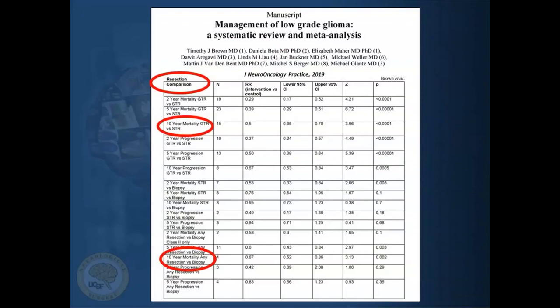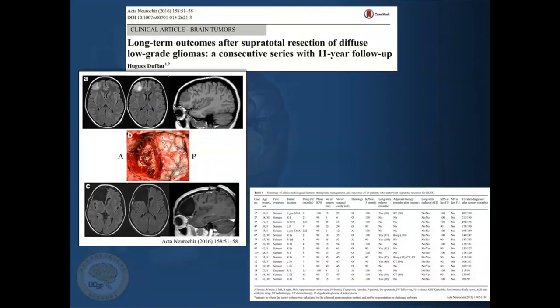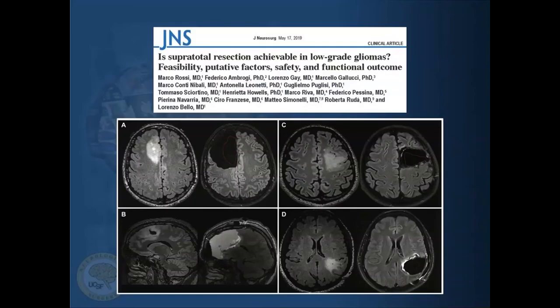With regard to low-grade gliomas, we and Dr. Defoe have published much on this through the years, showing how extent of resection is critical. Because these are very infiltrative diffuse lesions, you get the sense that unless you can do this safely, it's a very risky procedure. Hugh will talk about the concept in low-grade gliomas of going beyond the contrast enhancing — he's shown that a supertotal resection is critical in terms of reducing malignant transformation potential.